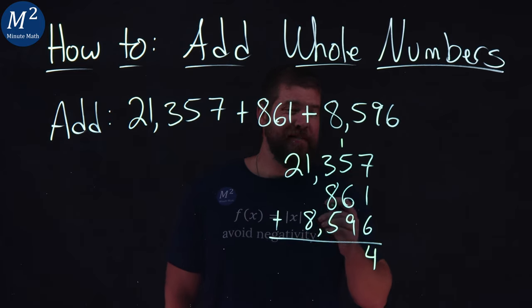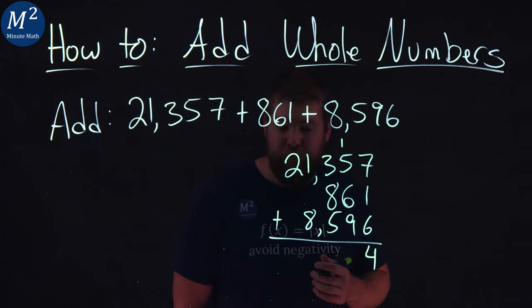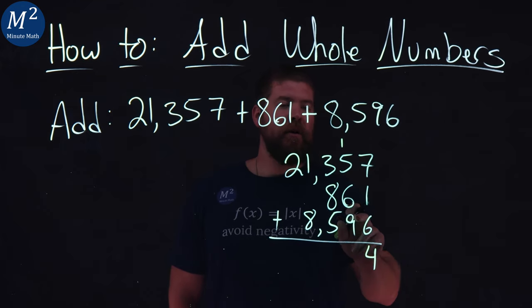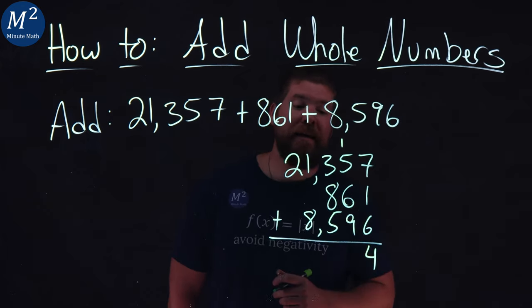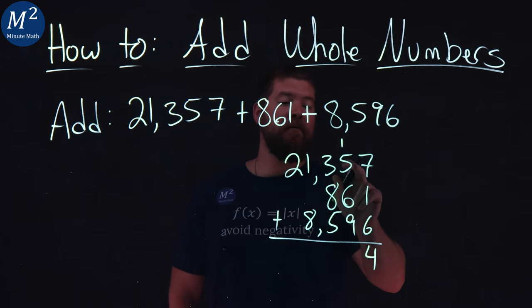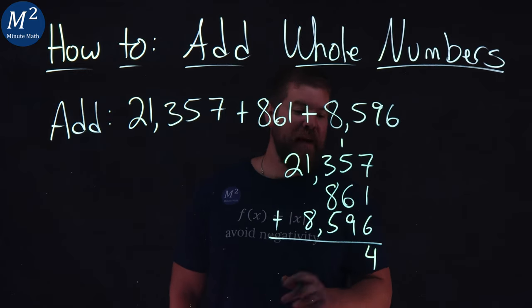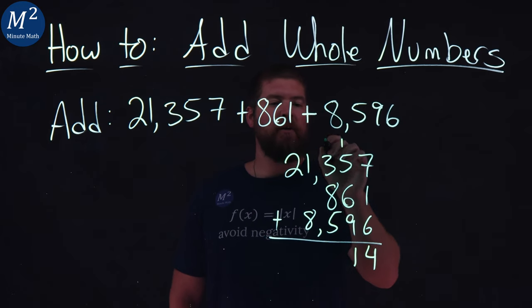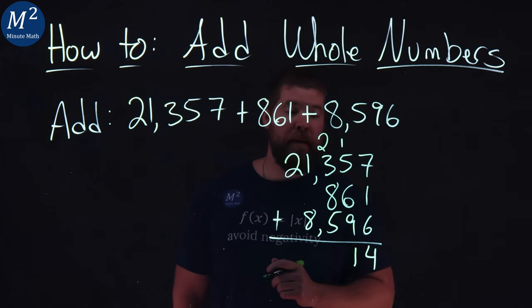From there, we want to keep adding these numbers up. I like to pair things up where I see them. 1 and 9 give me 10. That makes it easy. 5 and 6 gives me 11, and 10 plus 11 is 21. Put a 1 here, and I put a 2 I carry right there.